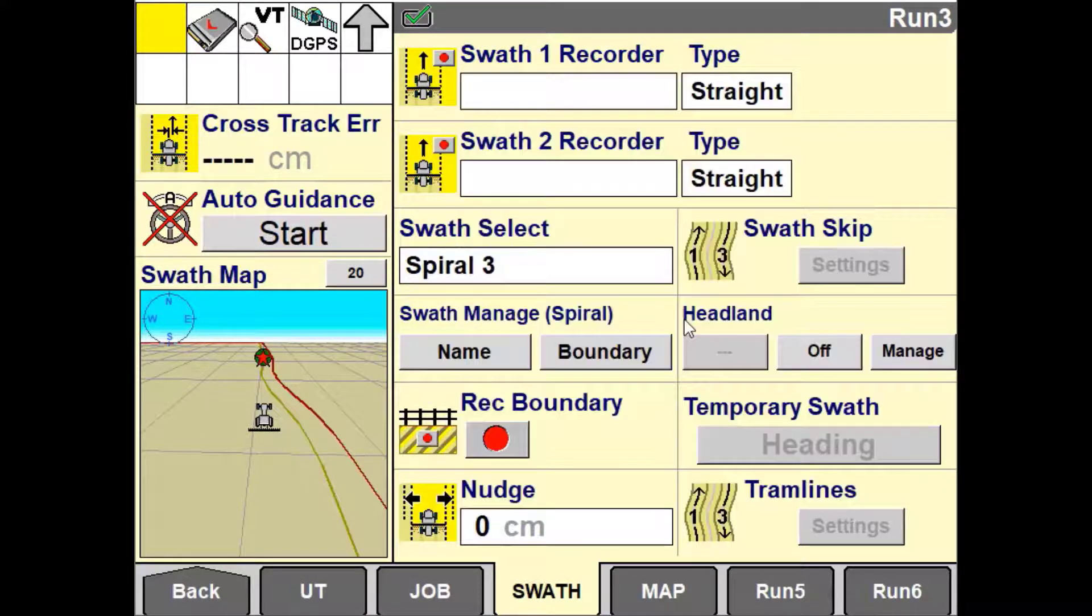Once a headland is either created or selected from the list, the headland user defined window will provide the options to disable and enable the headland. Setting headlands to on will indicate to the implement to observe the headlands.